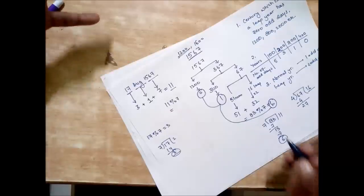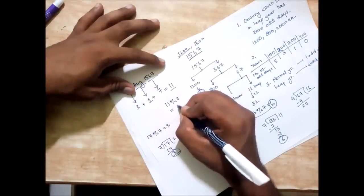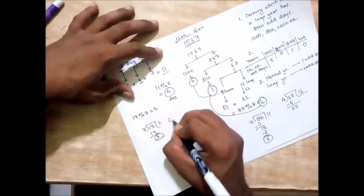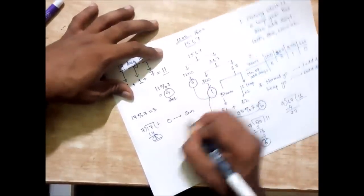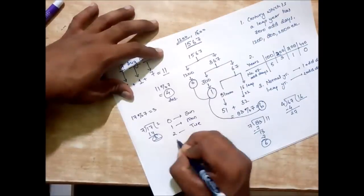This 11 needs to be then moduloed with 7 in order to find our final answer because we are trying to find again the number of odd days. This comes out to be 4. This is our answer.